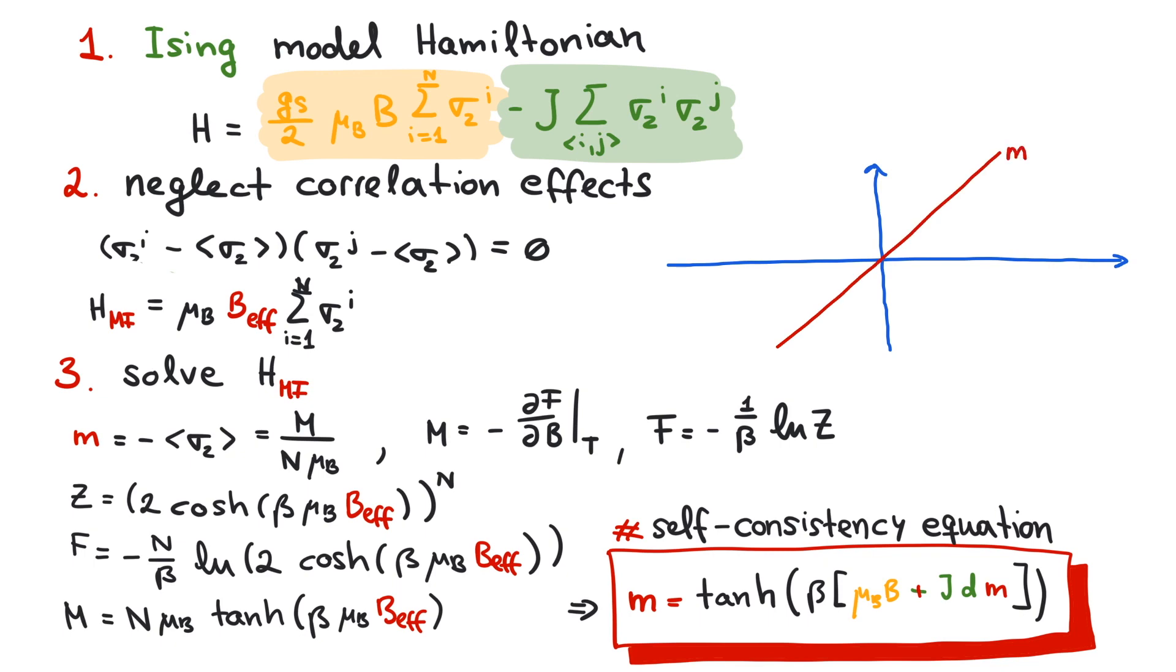Let's have a closer look at the case of B equals 0. For high temperatures, the inverse temperature beta is quite small. Therefore, the hyperbolic tangent is flat, and the plots only intercept at M equals 0. The paramagnetic phase is stable. That is, all spins point in a random direction.